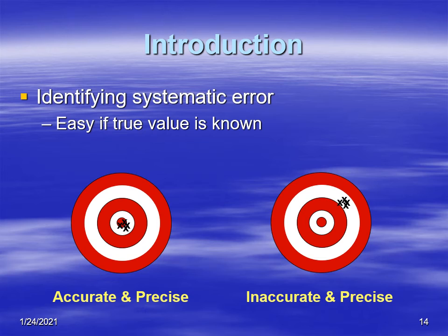When you identify systematic errors, if you know the true value then it's pretty easy to figure out how much systematic error there is. And these two examples show measurements that are accurate and precise, and inaccurate and precise. The precision is pretty good—they're all pretty close to each other—but the one on the left is closer to the true value, the one on the right is farther away. If you know what the true value is, if you know where the center is, then you can pretty much tell if it's inaccurate.